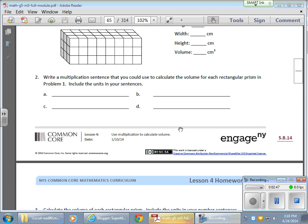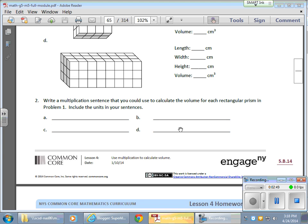Now, below, they'd like you to just write out a full multiplication sentence. So for D, let's work that one. I have a length, 1, 2, 3, 4, 5, 6, 7, 8.